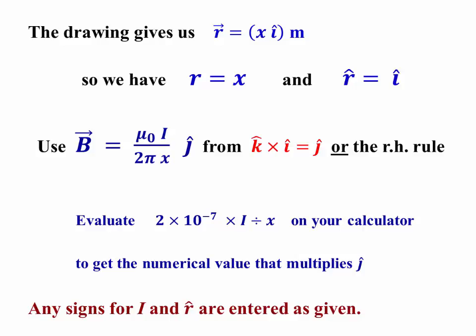Our drawing says our vector looks like some number x times i hat. So the magnitude is just x, and the r hat is i hat. We'll then get b as being mu naught i over 2 pi x j hat, because k cross i hat is j. But as I just showed you, you could also have gotten that j hat from the right-hand rule.